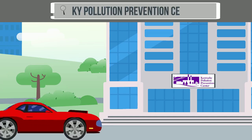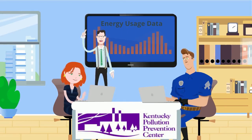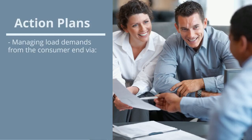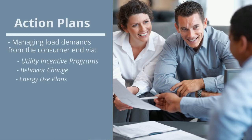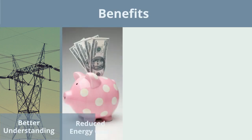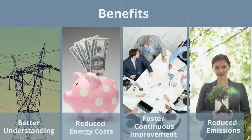Those in need of help decoding the bills can contact the Energy Detectives at the Kentucky Pollution Prevention Center. After analyzing their data, a company can develop an action plan. Such planning can help a facility save money and meet sustainability goals.